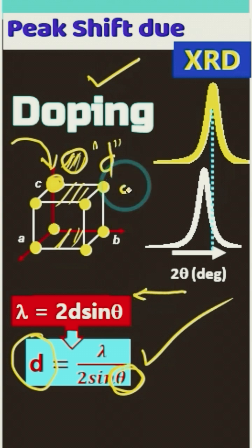If we bring smaller atoms here and it replaces this host atom, so there will be contraction in the unit cell and we will have smaller interplanar spacing. And smaller interplanar spacing means greater 2θ and the peak has to shift toward the right.